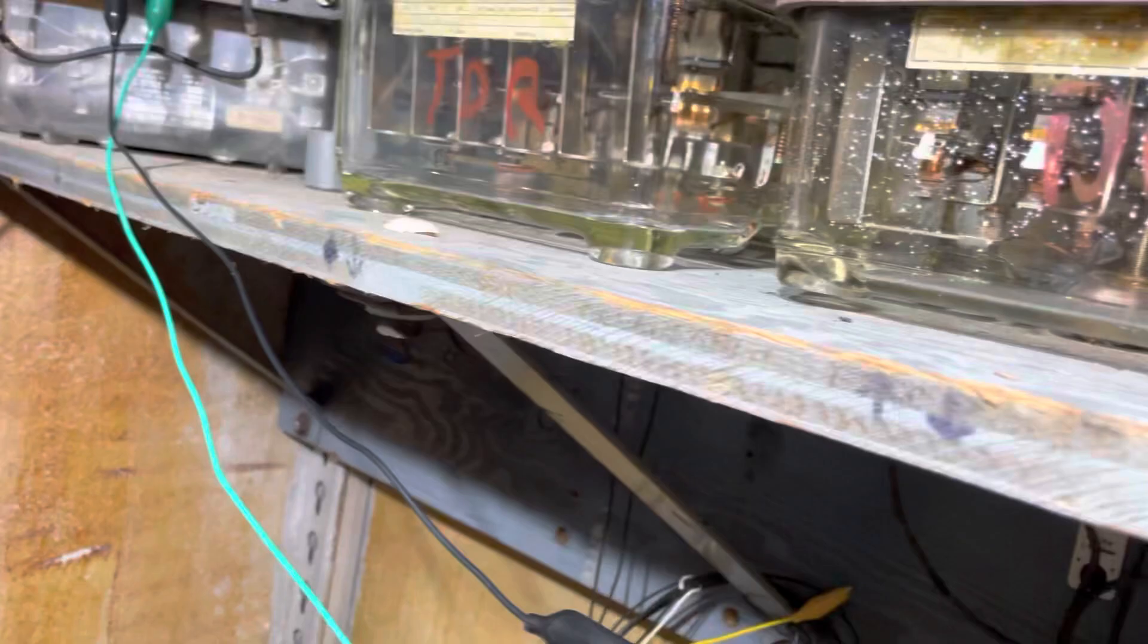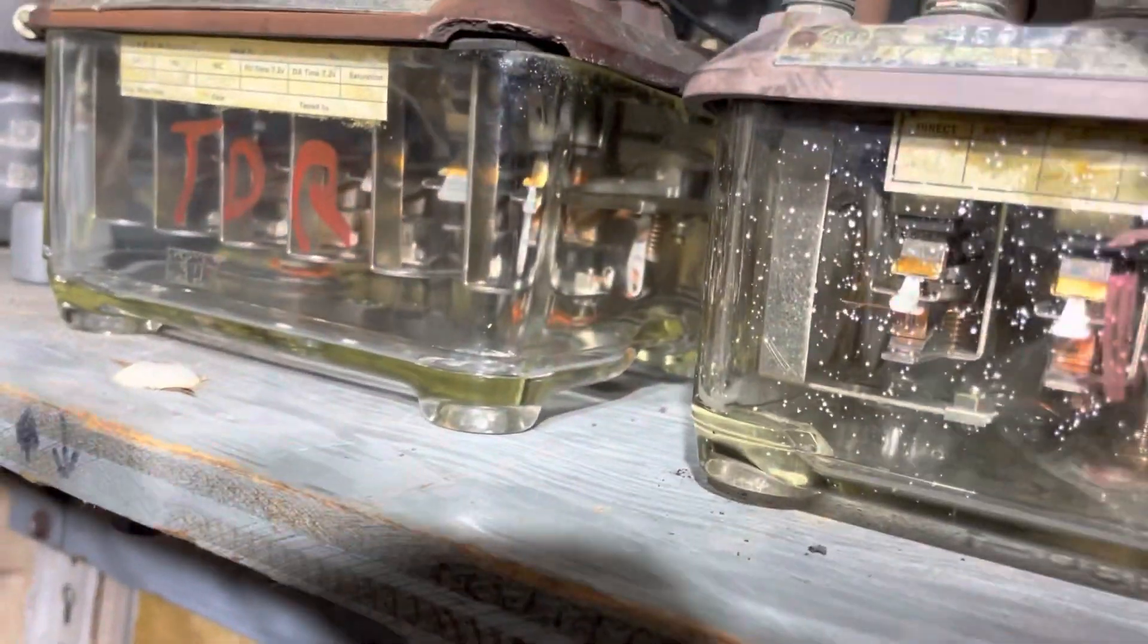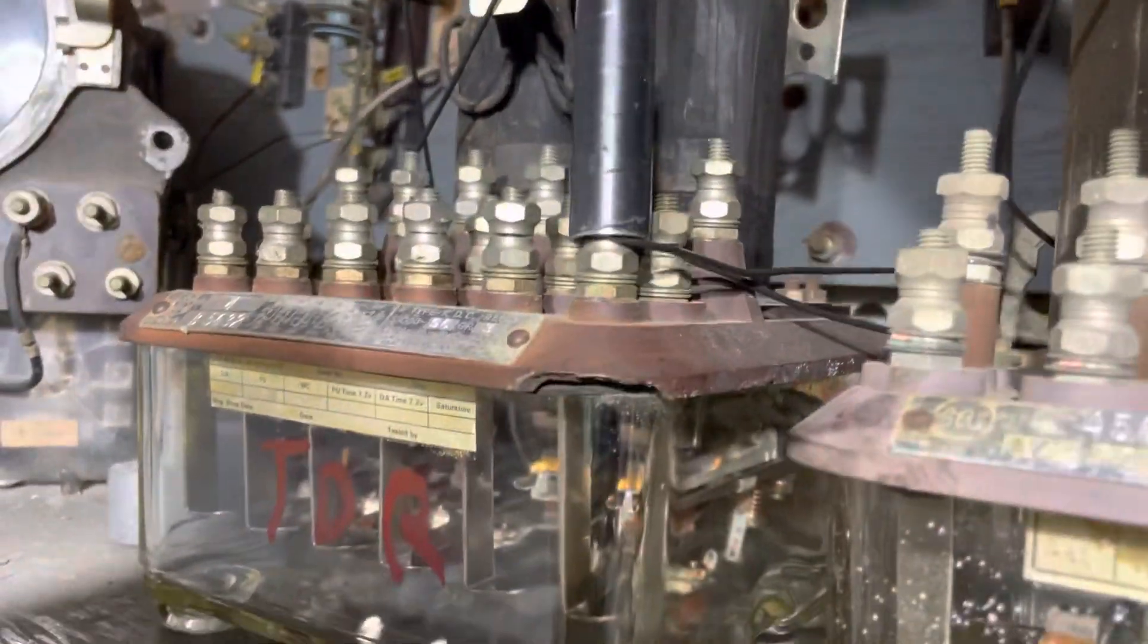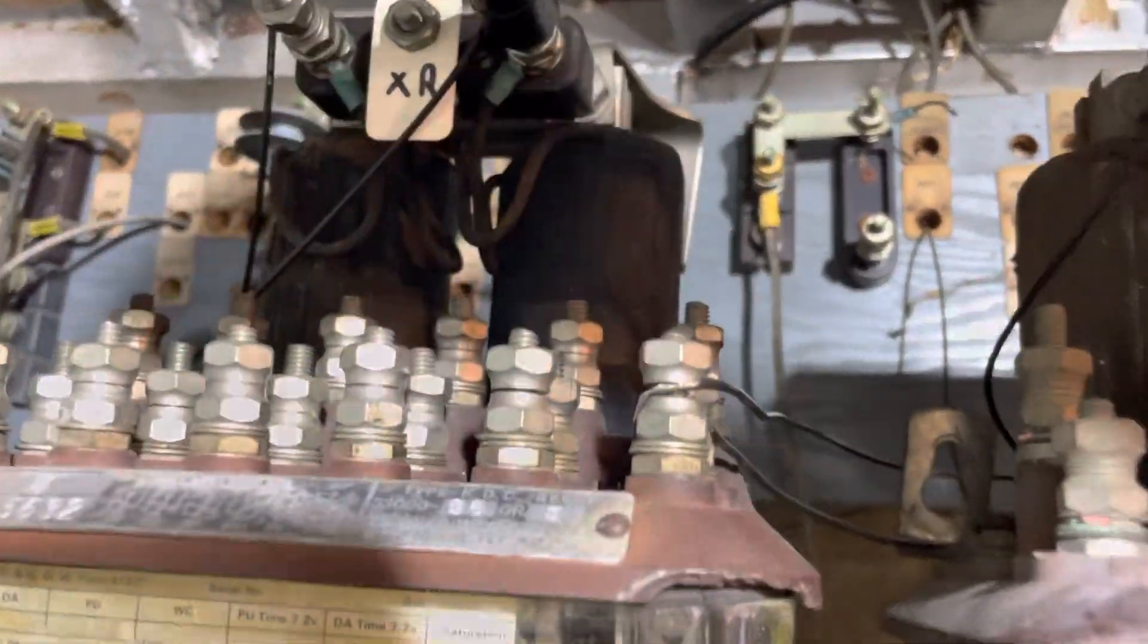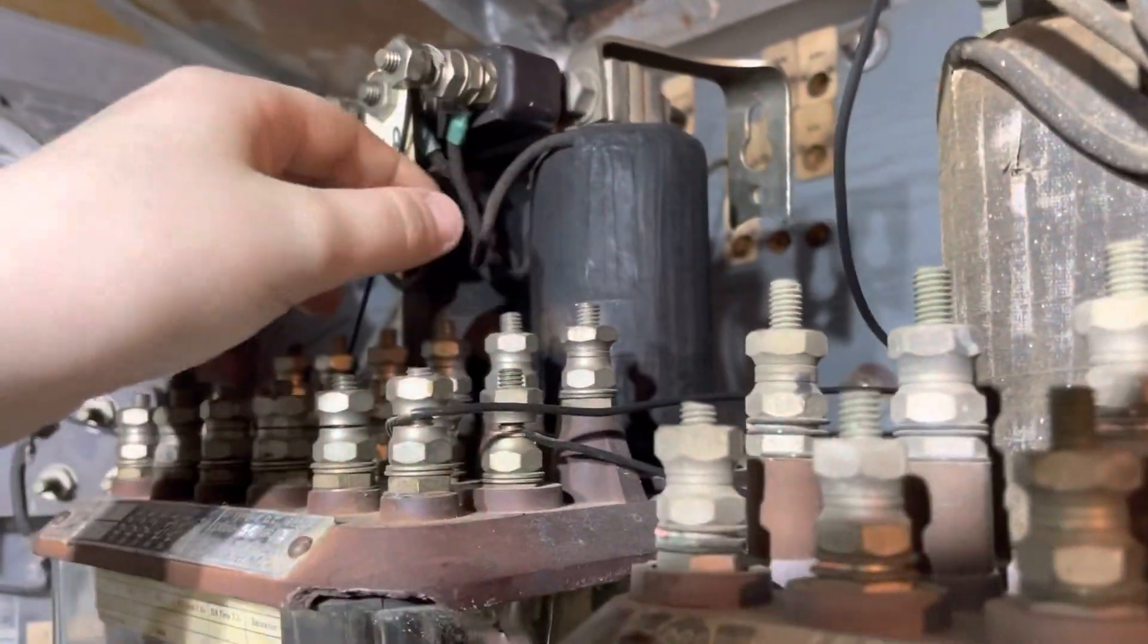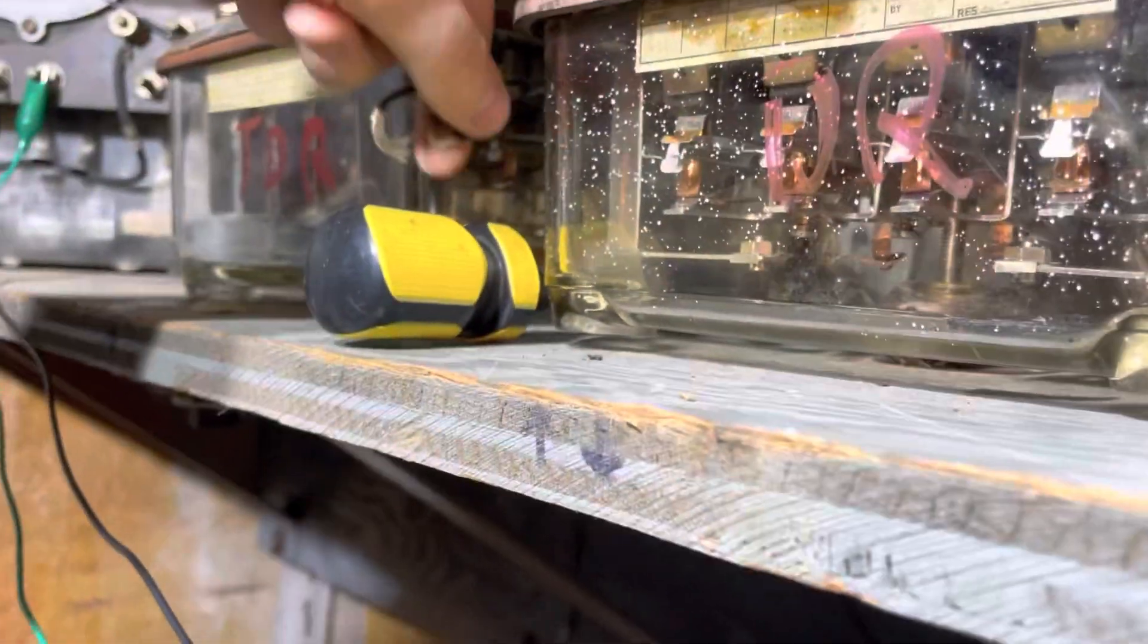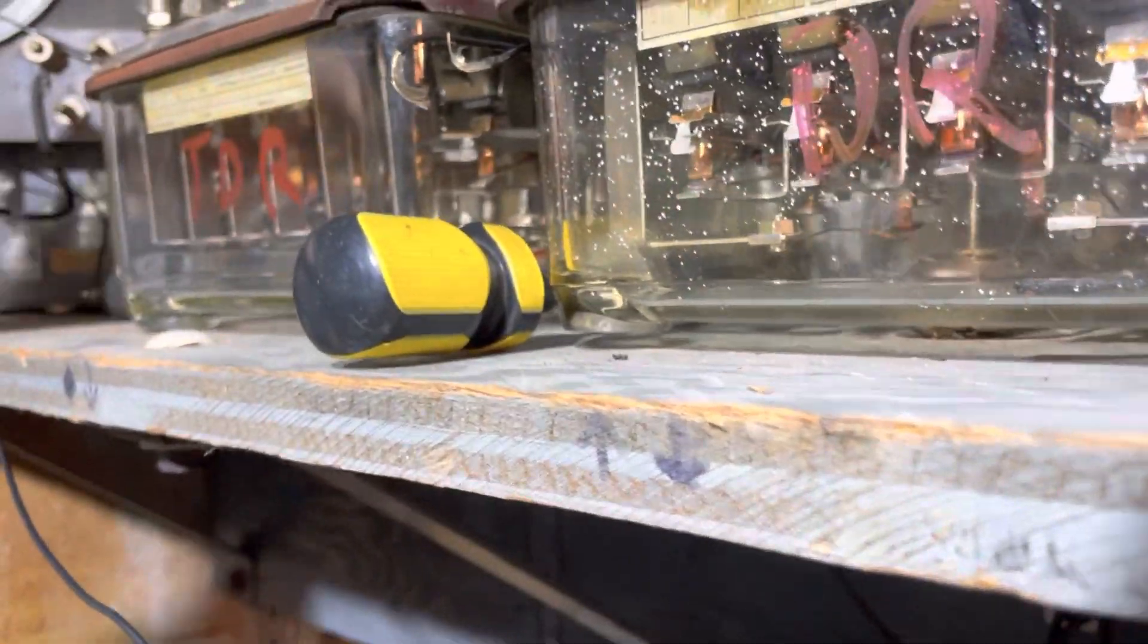Now we come over here, disconnect the temporary shunt, and we can go ahead and start disconnecting the relay. Let me disconnect these two. Relay is now free.